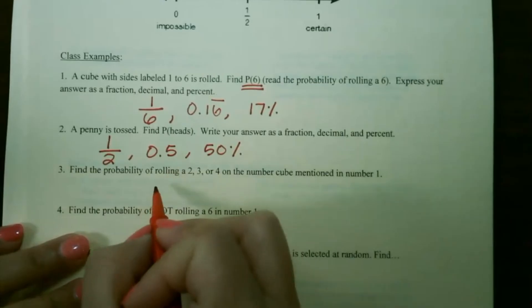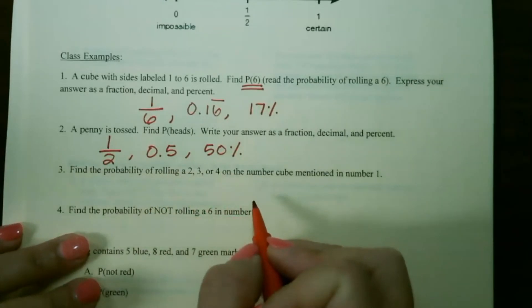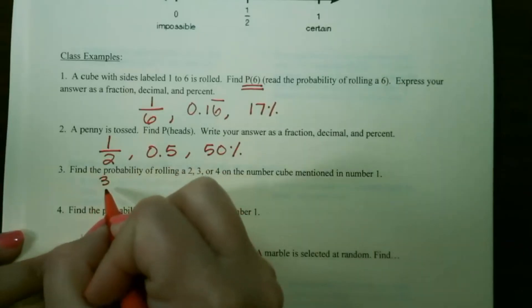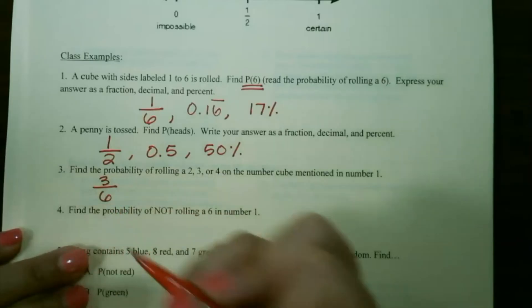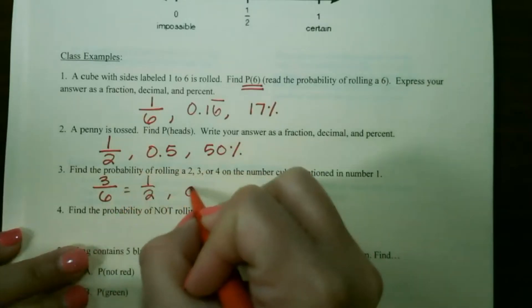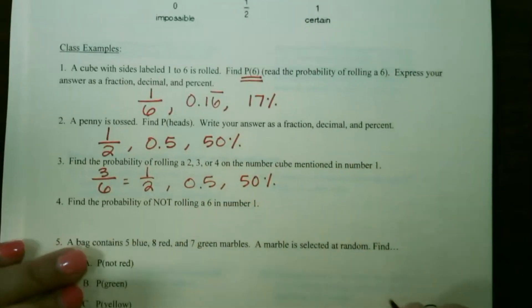For the next one, find the probability of rolling a 2, 3, or 4 on the number cube that was mentioned in number 1. So if I have 2, 3, or 4, there are 3 outcomes out of 6 total outcomes. This would simplify to 1 half, which would also be 0.5 and 50 percent.